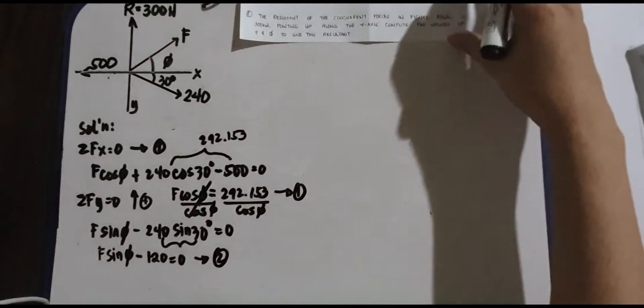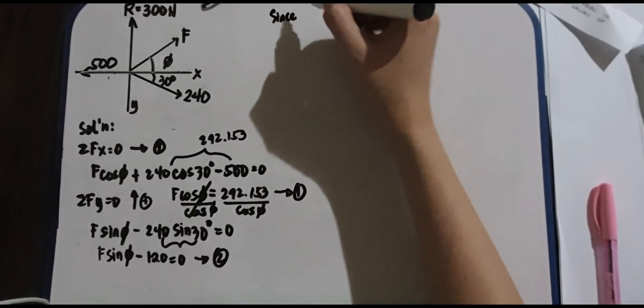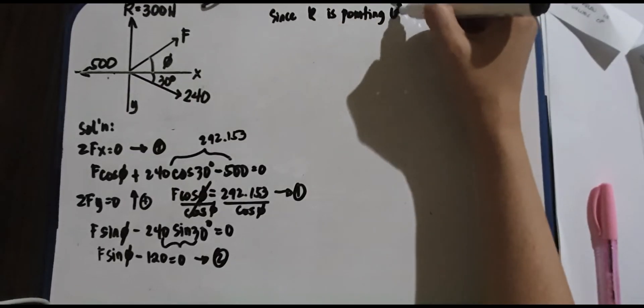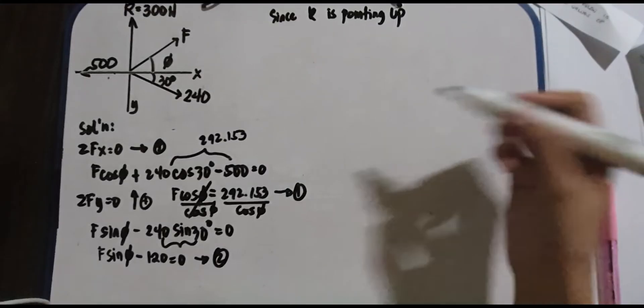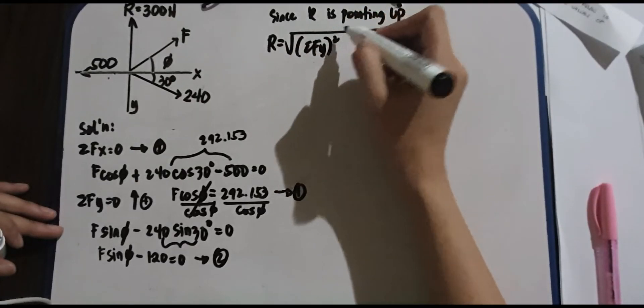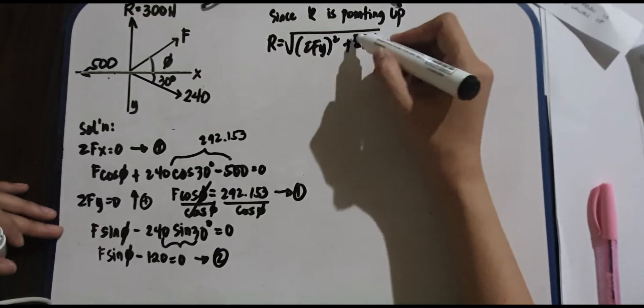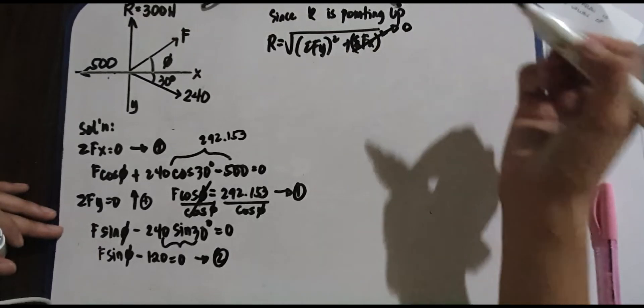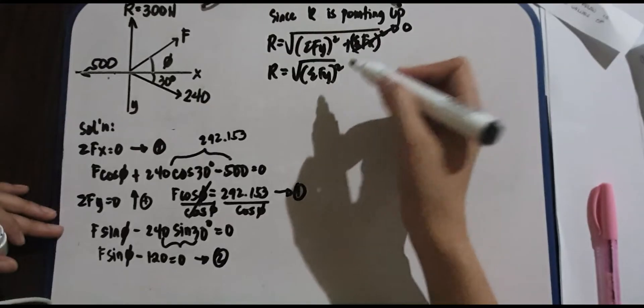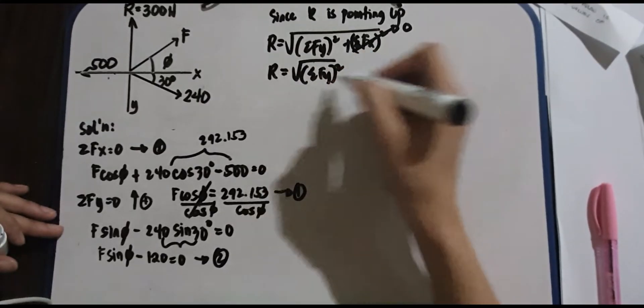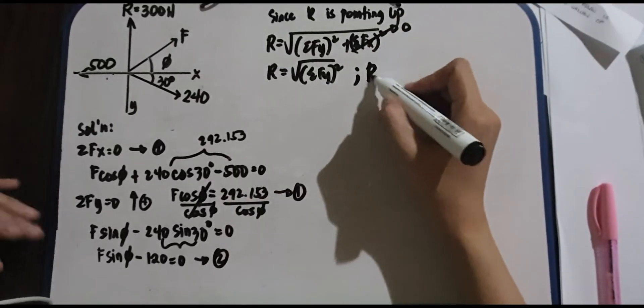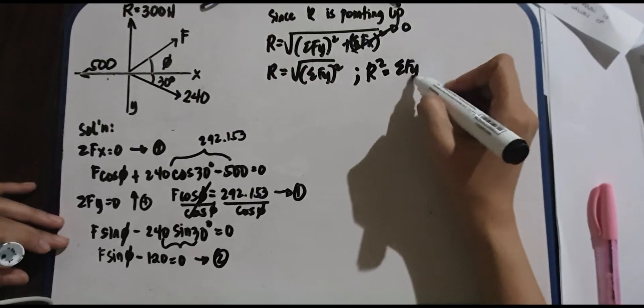Next, we have to know the resultant. Since we know the resultant, since R is pointing up along the y-axis, that means it has no x component. It has no x-axis. So R equals, let's write it, summation Fy squared plus summation Fx squared. Since I told you earlier there's no x, so that is zero. So we have R equals summation Fy squared. To remove this square root, multiply it by one-half and put it on the other side, or raise it to the power of two to remove it.